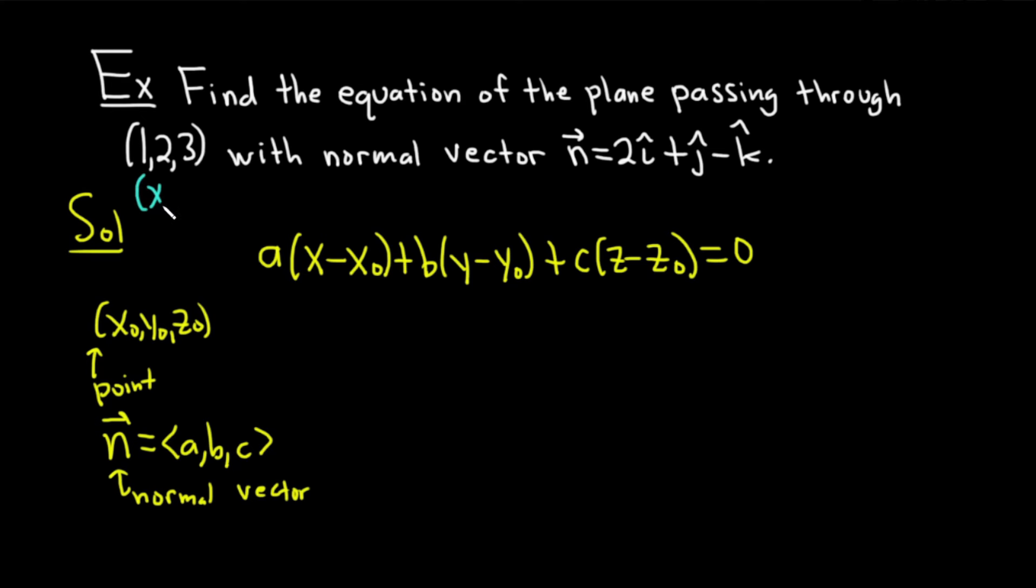So we're going to let our x₀, y₀, and z₀ be 1, 2, and 3. And our normal vector, I'm going to write it in component form.